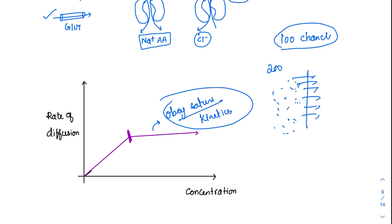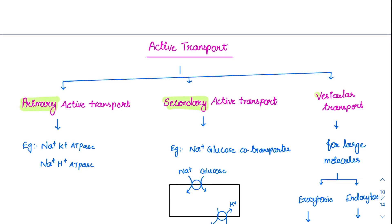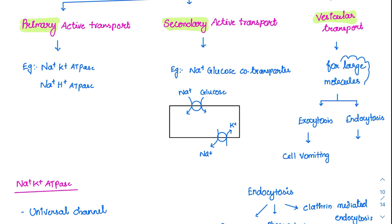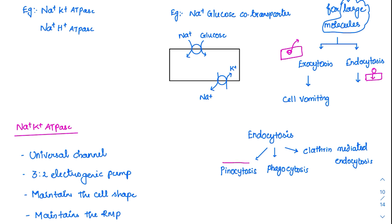This covers passive transport. Active transport requires energy and is classified into primary active transport, secondary active transport, and vesicular transport. Vesicular transport is for very large molecules. Two processes are studied: exocytosis — throwing molecules from inside the cell to the outside (also called cell vomiting) — and endocytosis — reabsorbing molecules from outside to inside.